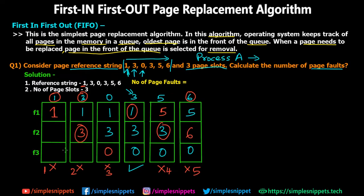Looking at the entire timeline chart, page faults occurred at iterations 1, 2, 3, 5, and 6 — so the total number of page faults is five. No page fault happened at iteration 4. This was a basic numerical of First In First Out, and the overall working of FIFO should now be clear.